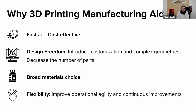Third, 3D printing allows you to replace bulky, heavy metal parts with lightweight plastic parts, and offers a lot of different materials. At Formlabs, we have a broad choice of materials, from flexible to stiff or ESD safe. And finally, 3D printing brings flexibility — it helps improve operational agility, so you can react to market changes or customer requirement changes, and encourage continuous improvements on the factory floor.